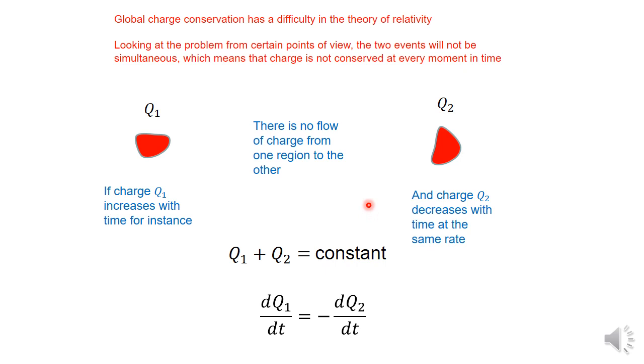So it turns out that global charge conservation cannot happen, according to the theory of relativity. This is not the way charge is conserved. It's not conserved globally.